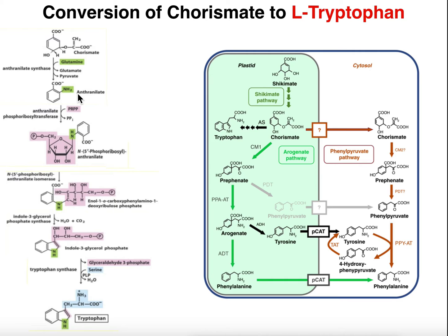Anthranilate is now going to be attached to a phosphoribose ring, catalyzed by an enzyme called anthranylate phosphoribosyl transferase. Being a phosphoribosyl transferase, we expect this to utilize PRPP to donate the ribose-5-phosphate, which it does. We lose pyrophosphate and end up with a molecule called N5'-phosphoribosyl anthranilate. Notice that the anthranilate ring has been rotated — the nitrogen attaches to the one position on the ribose ring, and the carboxyl group is pointed downwards.